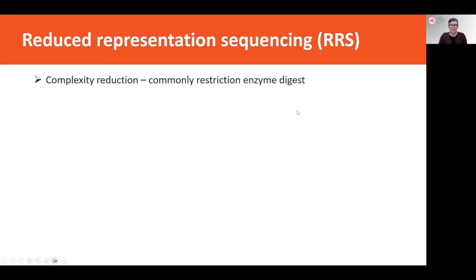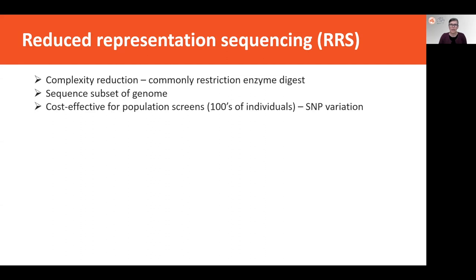Reduced representation sequencing is a similarly cost-effective approach for obtaining genetic information across multiple individuals. It relies on complexity reduction — commonly achieved through restriction enzyme digest — meaning you are only sequencing a subset of the genome. This makes it a very cost-effective approach for screening large numbers of individuals. The approach focuses particularly on single nucleotide polymorphism (SNP) variation across individuals, using these as genetic markers to infer things about population dynamics of threatened species.